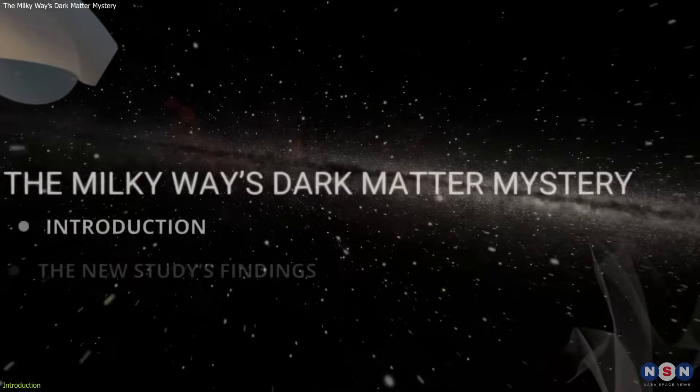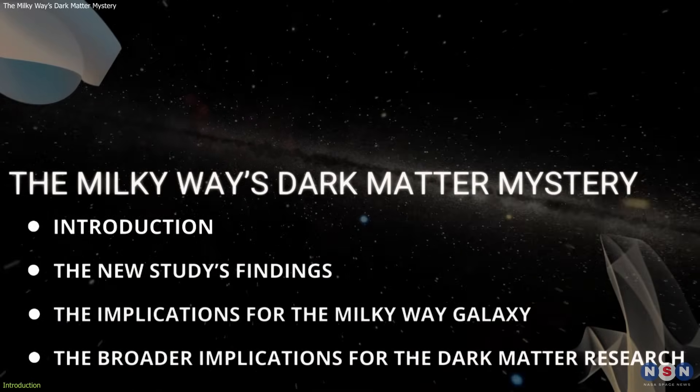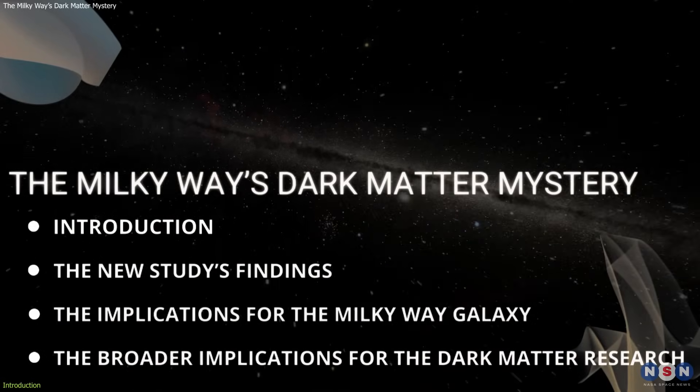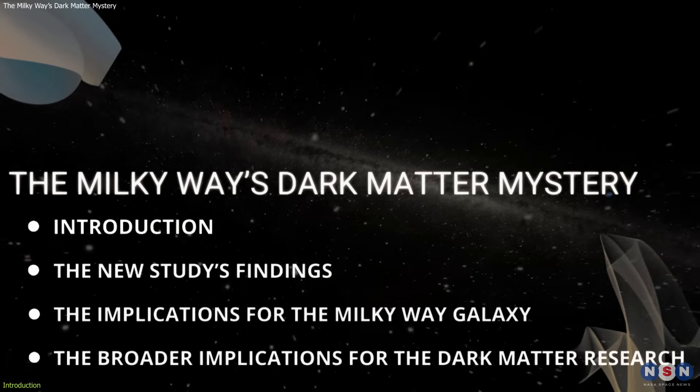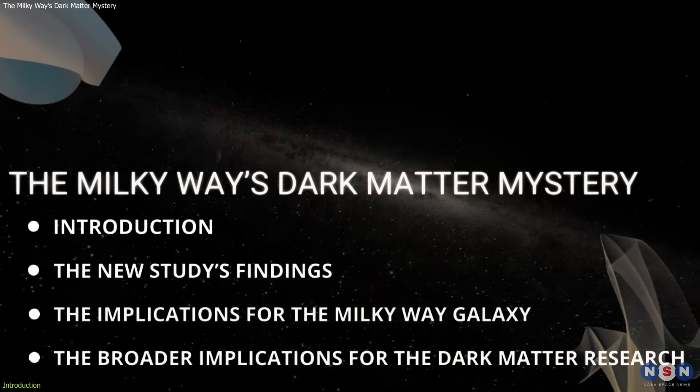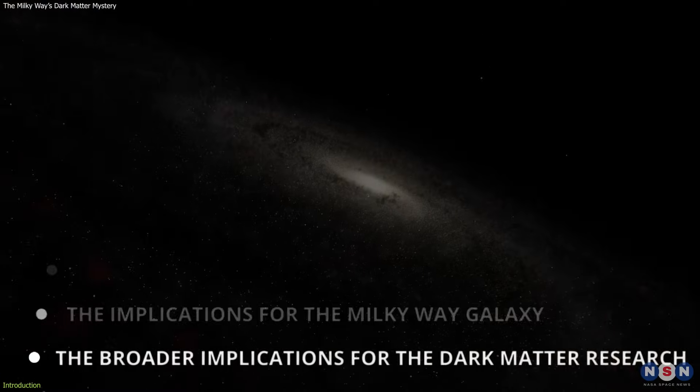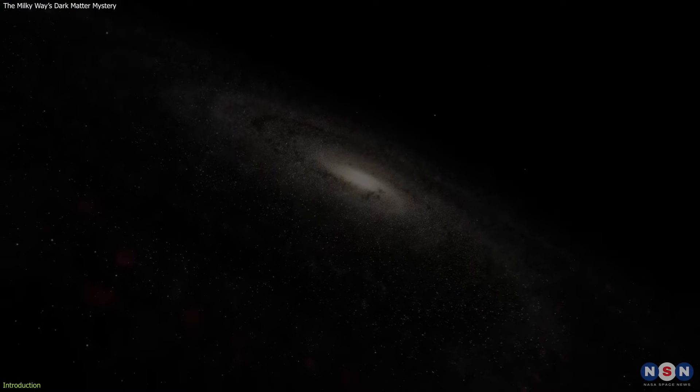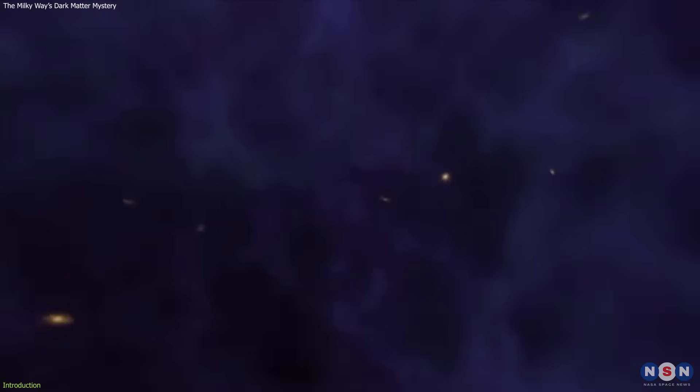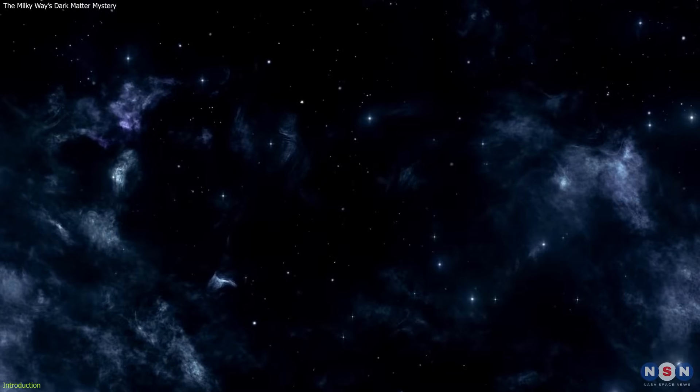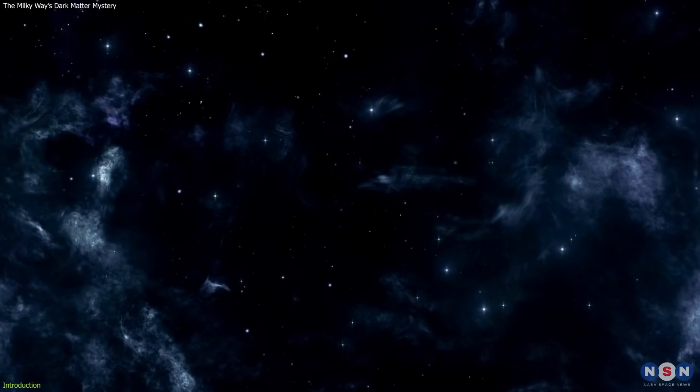In this video, I will tell you about this new study by MIT physicists that suggests that the Milky Way galaxy's core may contain less dark matter than previously estimated, based on the surprising discovery that stars at the edge of the galaxy travel more slowly than expected. I will also explain why this is important for understanding the galaxy's formation and evolution, and how it relates to the ongoing quest to unravel the mystery of dark matter.